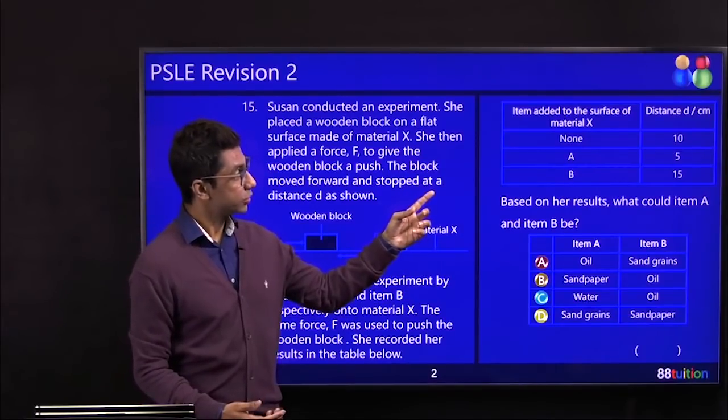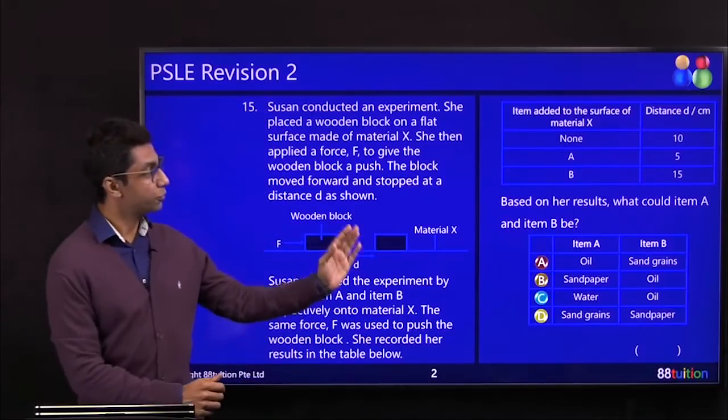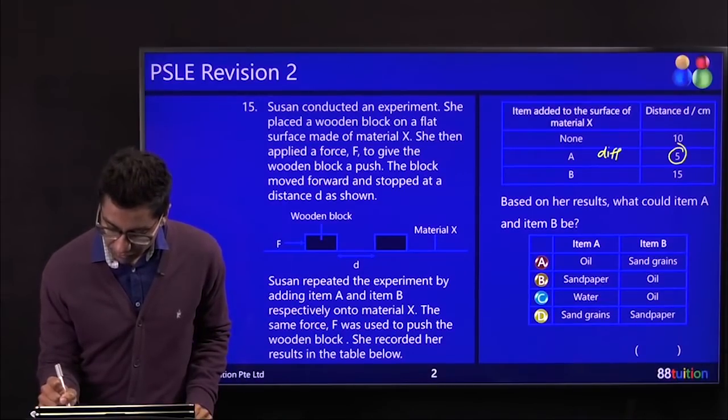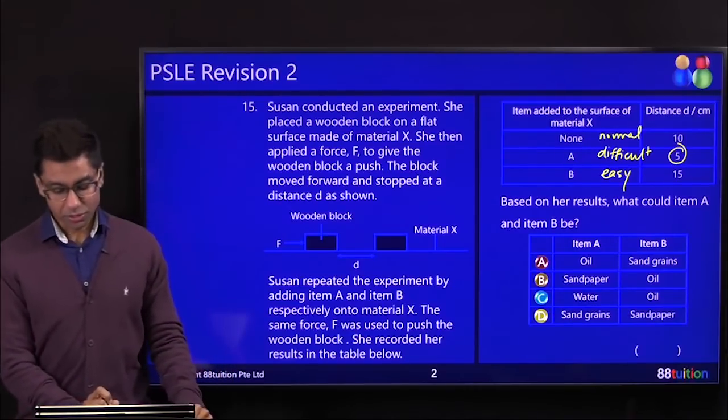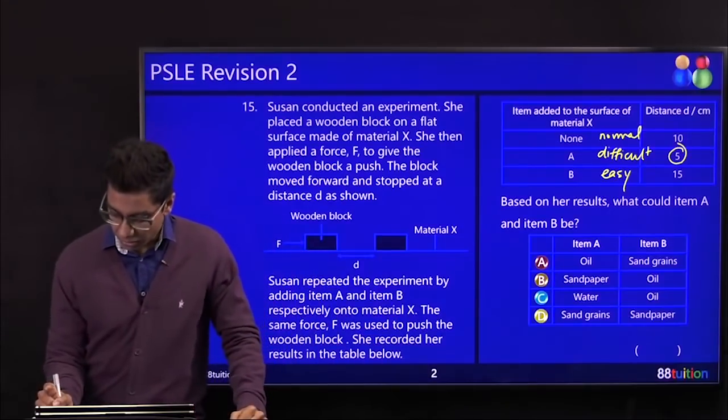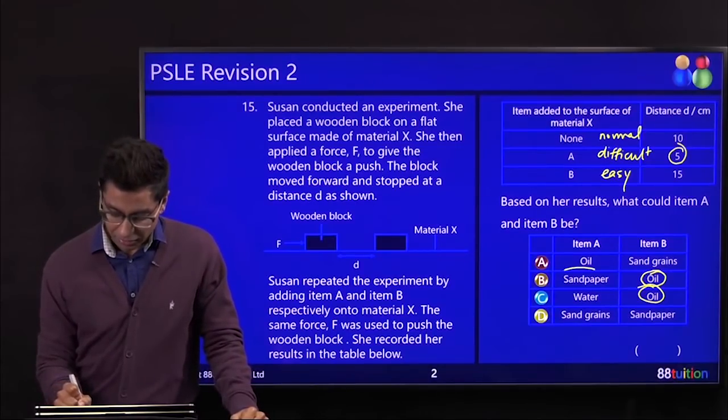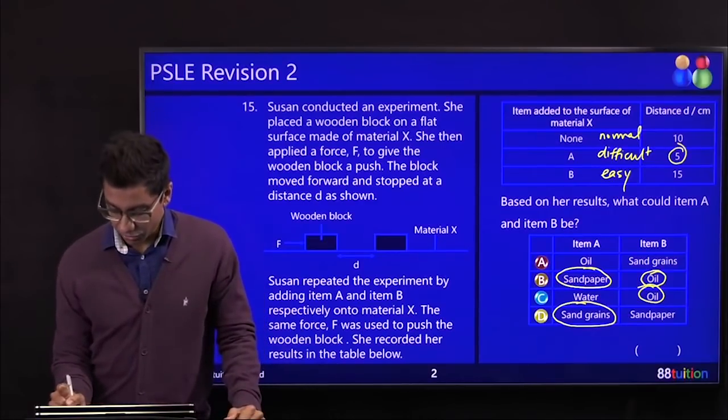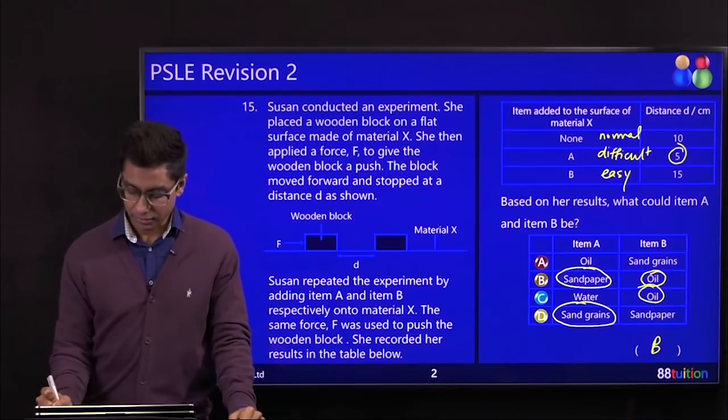Then there's something added A and then something else added B. And then if she found it easier to push on B, then if there was nothing on it, but when there was A, she found it more difficult. So the box could not move further. It only moved till 5 cm. So this is difficult. This is easy. This is normal. So B must be something that reduces friction, not sand grains and sandpaper which makes it difficult. A must be it made it difficult. Water can make it easy also, right? So the only two circles is for B.